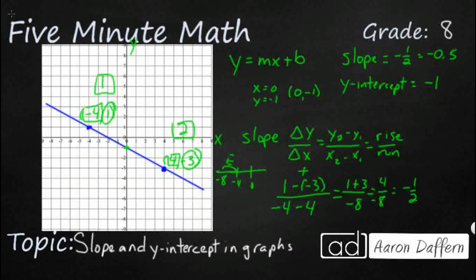Instead of one minus negative three, what if we did negative three minus one? And instead of negative four minus four, what if we did four minus negative four?